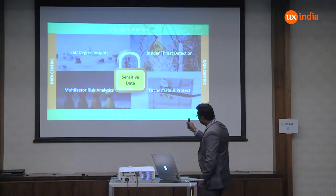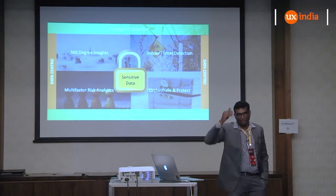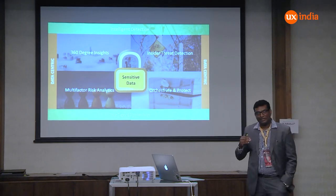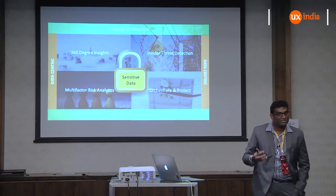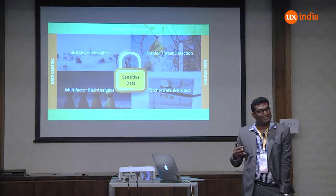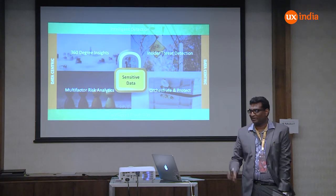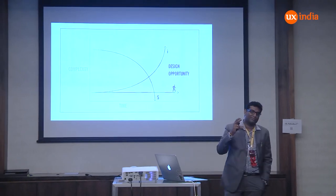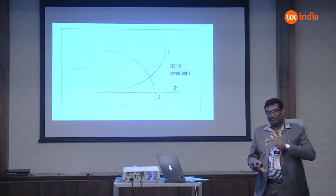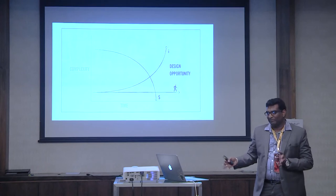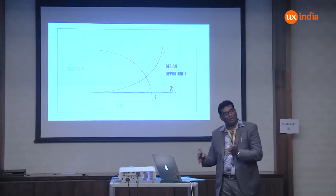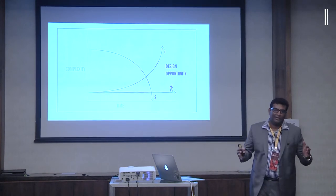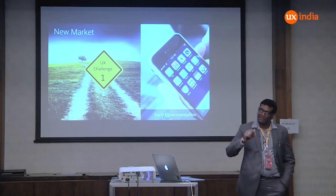We look at the whole data landscape and get 360-degree insights. We call it intelligent detection — and once you detect it, intelligent protection. Whether it's insider threats like a malicious user, or multi-risk factor analytics using analytics to find risk, or orchestrated protection. When you're solving a problem at scale, your complexity comes down over time and your design opportunity keeps growing, because you're dealing with tons of data and various interesting opportunities.